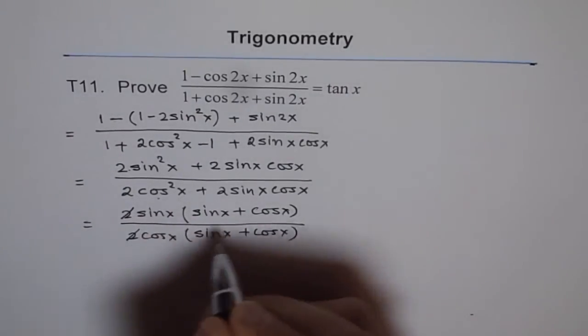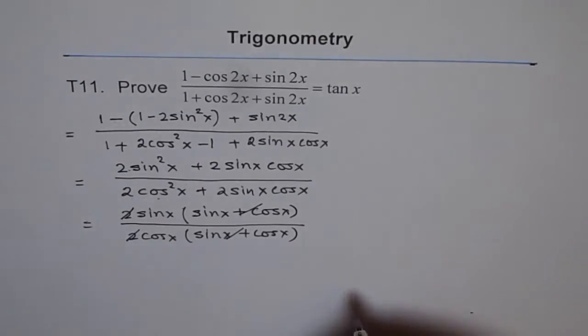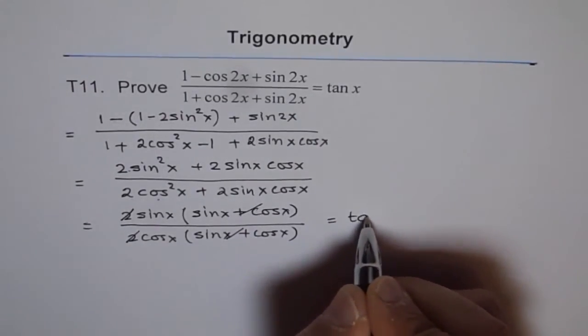Now, this 2 and 2 cancels, sin x plus cos x cancels, and what are we left with? Tan x, so we get tan x. Do you see that?